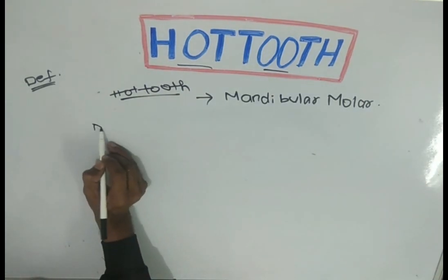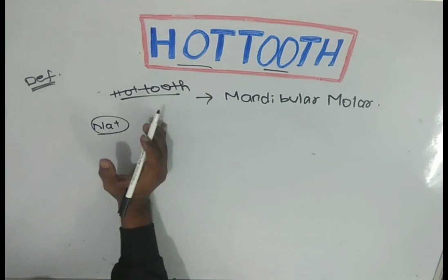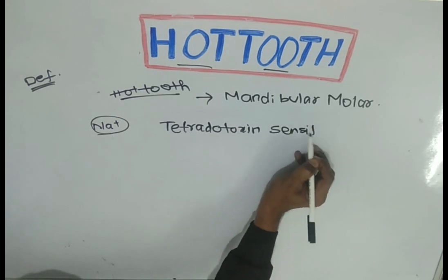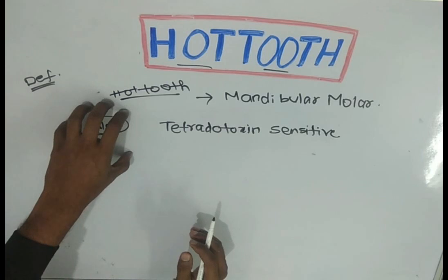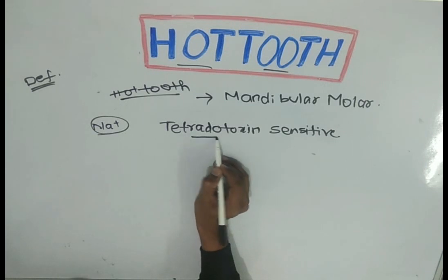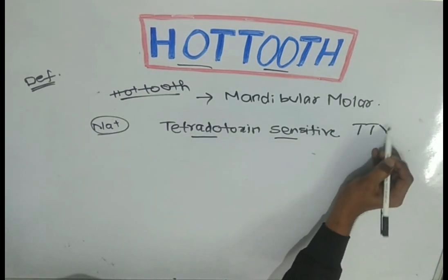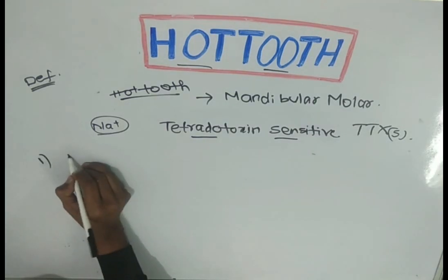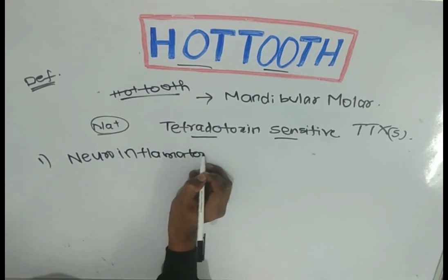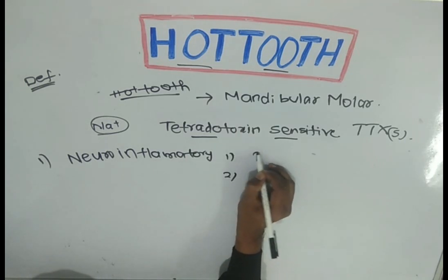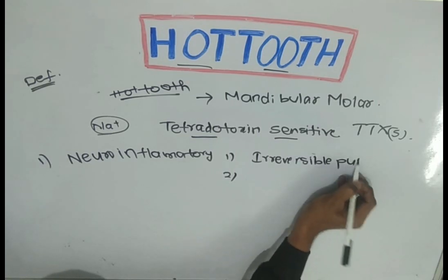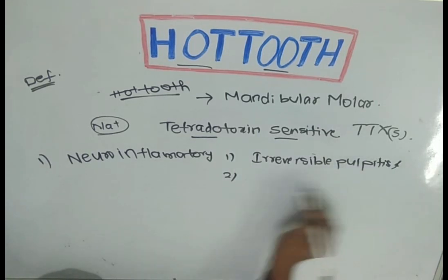Basically, the sodium-gated channels which are present on the nerve membrane are tetrodotoxin-sensitive. In neuroinflammatory conditions like irreversible pulpitis and abscess, these channels undergo a change.